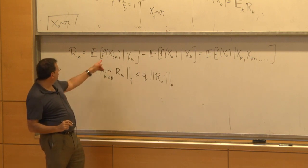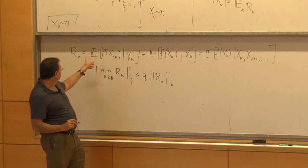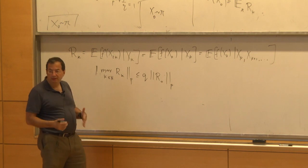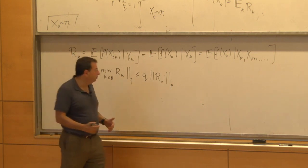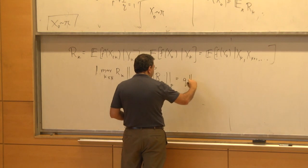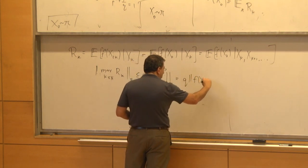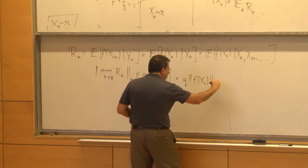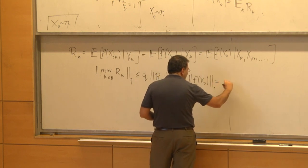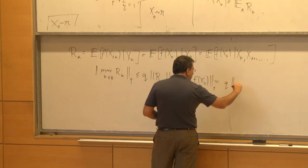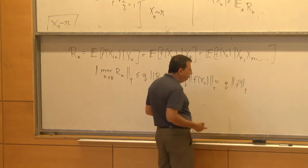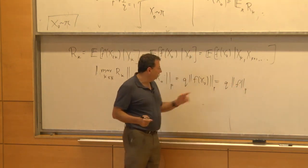What is R_0? R_0 is just F. F of x_0, but that's just our definition — when we write norm F of p, we mean norm within LP of pi, so this is the same thing. So the LP norm of the max is bounded by Q times the norm F_p.